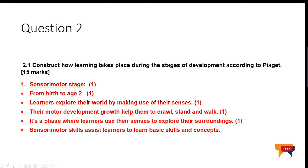Question 2, you were instructed to construct how learning takes place during the stages of development according to Piaget, and that counted for 15 marks. Students, before you answer any question, you need to look at the mark allocation. If the mark allocation is 15, as in question 2.1, then you know you have a lot of writing to do. You can't just give simple one-word answers.